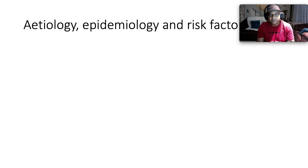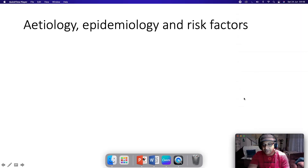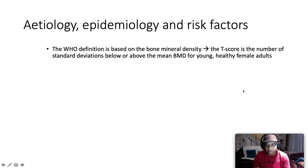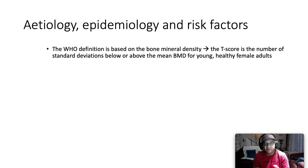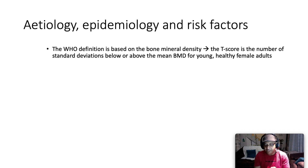Let's look at etiology, epidemiology, and risk factors. The WHO definition of osteoporosis is based on bone mineral density. We look at the DEXA T-score, which is the number of standard deviations below or above the mean bone mineral density compared to young healthy female adults. We also compare that to the Z-score.